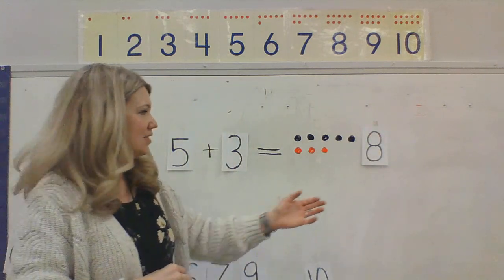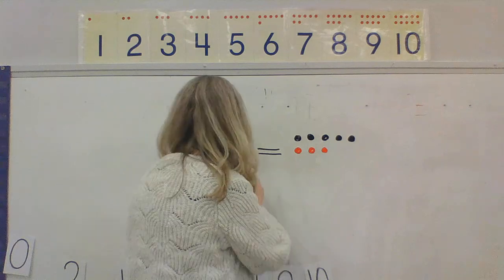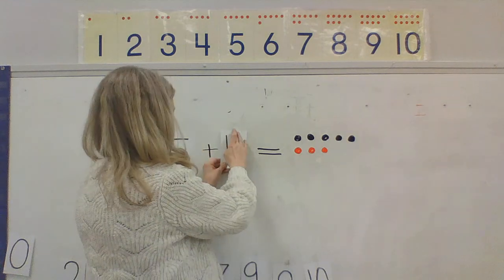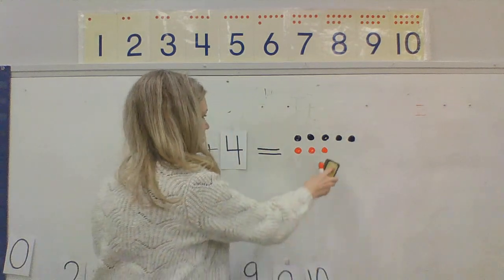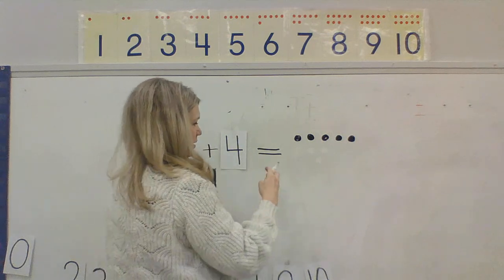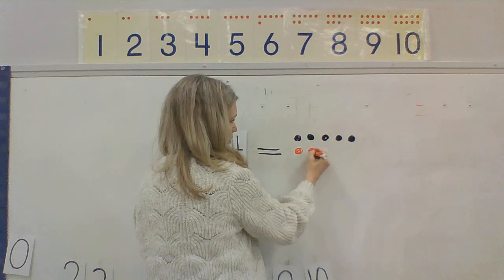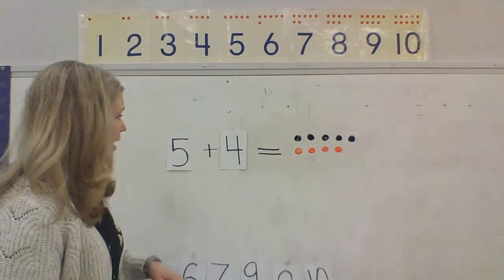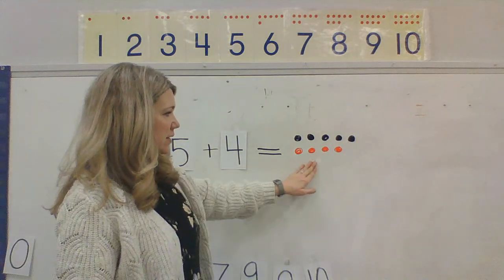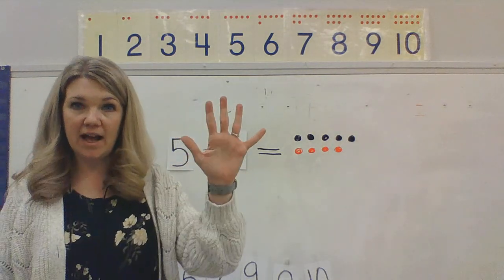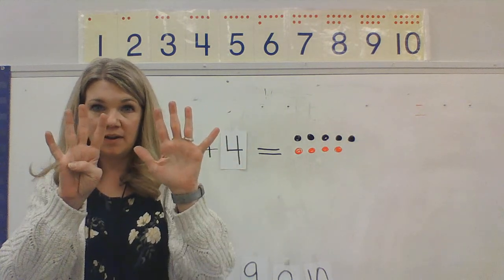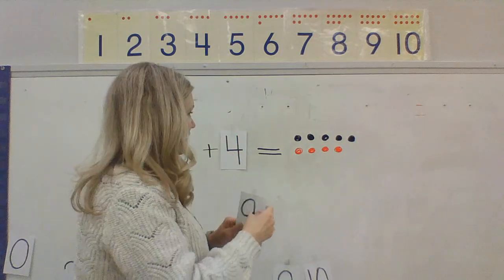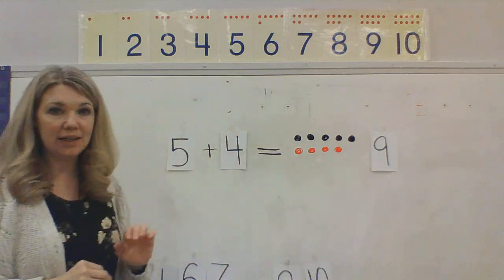Very good, kindergartners. Okay, let's try one last one. If I have the number 5 and I have 4. So, I have 5 circles and I want to add 1, 2, 3, 4. Now, what number do I have? 5 plus 4 equals or is the same as 5 plus 4 is the number 5, 6, 7, 8, 9. The number 9. I have 9. 5 plus 4 equals 9.